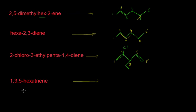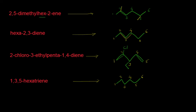Let us look at the fourth example: 1,3,5-hexatriene. 'Hexa' means 6 carbon atoms, so we have 1, 2, 3, 4, 5, and 6. We have three carbon-carbon double bonds at position numbers 1, 3, and 5. The structure drawn gives us 1,3,5-hexatriene.